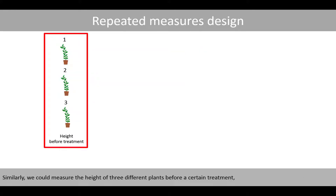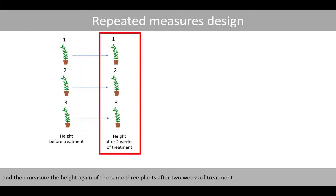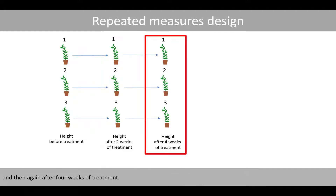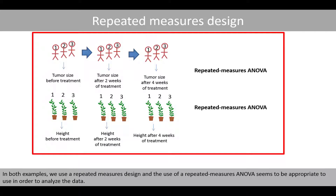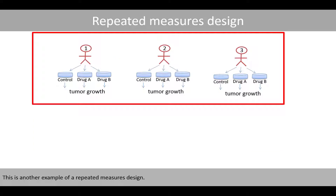Similarly, we could measure the height of three different plants before a certain treatment, and then measure the height again of the same three plants after two weeks of treatment, and then again after four weeks of treatment. In both these examples, we use a repeated measures design, and a repeated measures ANOVA seems appropriate to use to analyze the data.